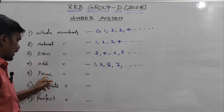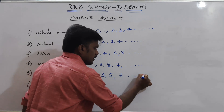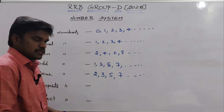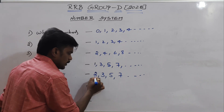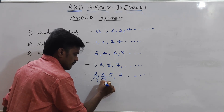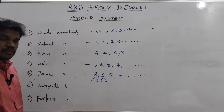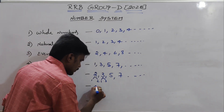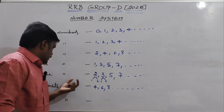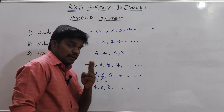Prime numbers are 2, 3, 5, 7 and so on. Each prime number has exactly two multiples — 1 and itself. For example, 2 has multiples 1 and 2; 3 has multiples 1 and 3, and so on.